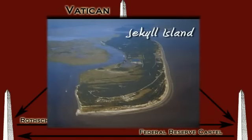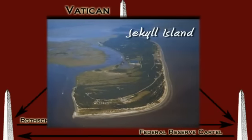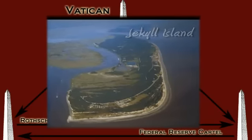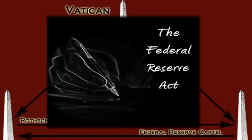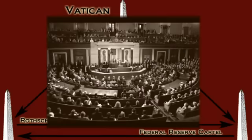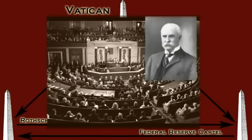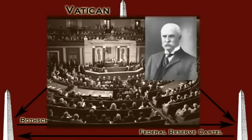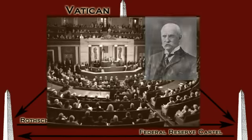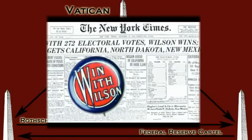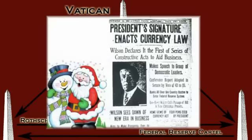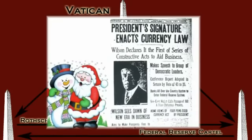In 1910, a secret meeting was held at the J.P. Morgan estate on Jekyll Island off the coast of Georgia. It was there that the central banking bill called the Federal Reserve Act was drafted. The bill was written by bankers for bankers, and the meeting was held in complete secrecy. After the bill was constructed, it was handed to their political spokesperson Senator Nelson Aldrich, who pushed it through Congress. In 1913, with heavy sponsorship by the bankers, Woodrow Wilson became president, having already agreed to sign the Federal Reserve Act in exchange for campaign support.